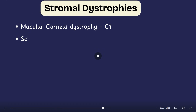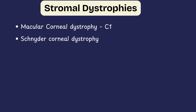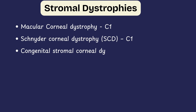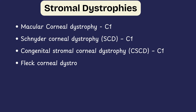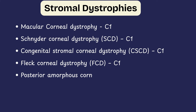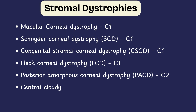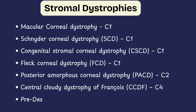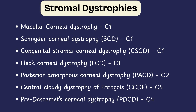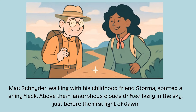Next we move to the proper stromal dystrophies, which affect the stroma itself without primarily involving the epithelium or endothelium. The key members are: macular corneal dystrophy, Schnyder corneal dystrophy, congenital stromal corneal dystrophy, fleck corneal dystrophy, posterior amorphous corneal dystrophy, central cloudy dystrophy of François, and pre-Descemet's corneal dystrophy. Two of these — central cloudy dystrophy of François and pre-Descemet's corneal dystrophy — sit in category 4 of the IC3D, meaning they are very rare with limited evidence.